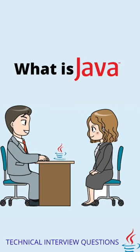Talking about its history — originally, Java was developed for handling portable devices and set-top boxes. In 1995, Sun changed the name to Java from Oak. Later, in 2009, Oracle Corporation acquired Sun Microsystems and took ownership of three key Sun software assets.